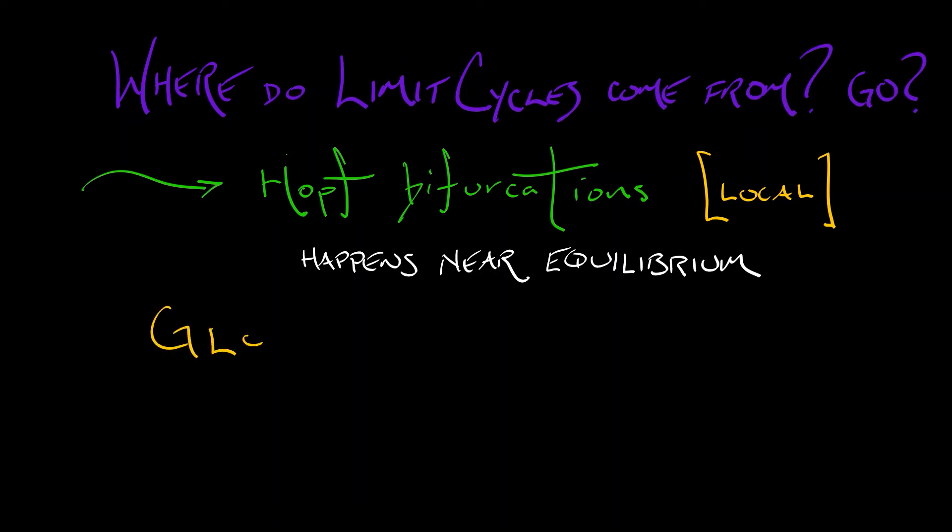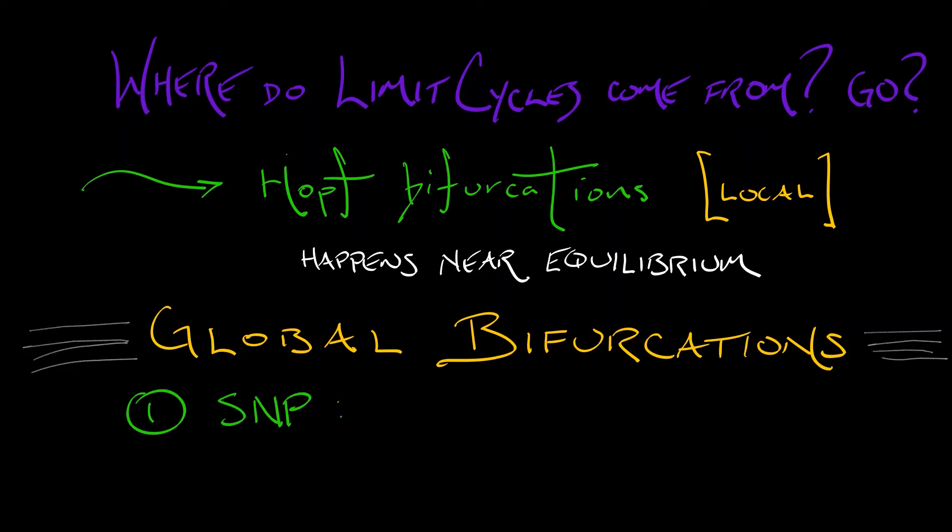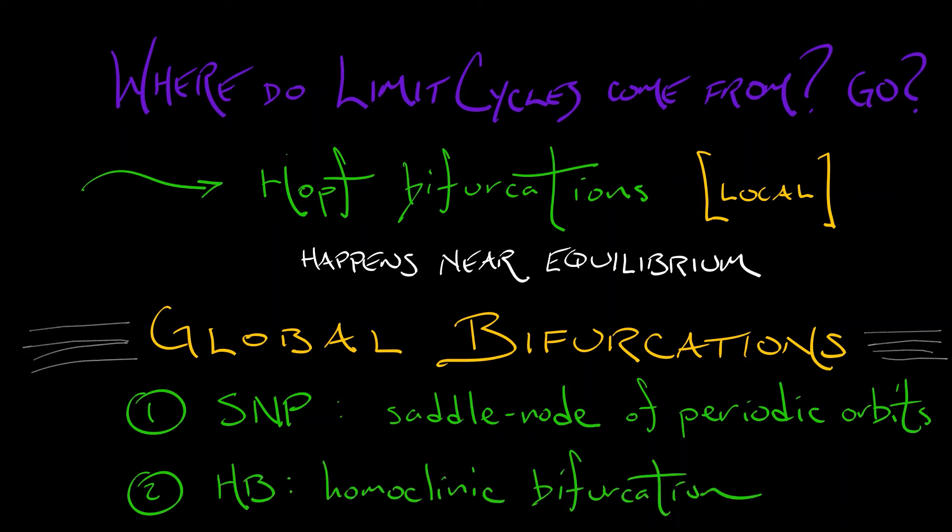But there are other stranger types of bifurcations in the world called global bifurcations that are not localized about an equilibrium. We're going to take a look at two of them that implicate periodic orbits. The first is called the SNP, the saddle node of periodic orbits. This one is pretty simple. The second, a bit more complex, is called the homoclinic bifurcation.